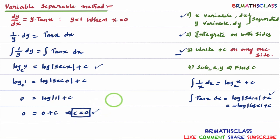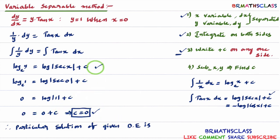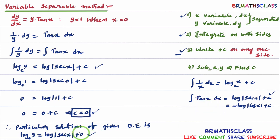We need to find the particular solution of the given differential equation. We found the general solution, substituted x and y values to get the c value. Now substitute this c value back into the general solution. Therefore, the particular solution of the given differential equation is: log y base e equal to log|sec x| plus 0, which simplifies to log y equal to log|sec x|. This is the particular solution.